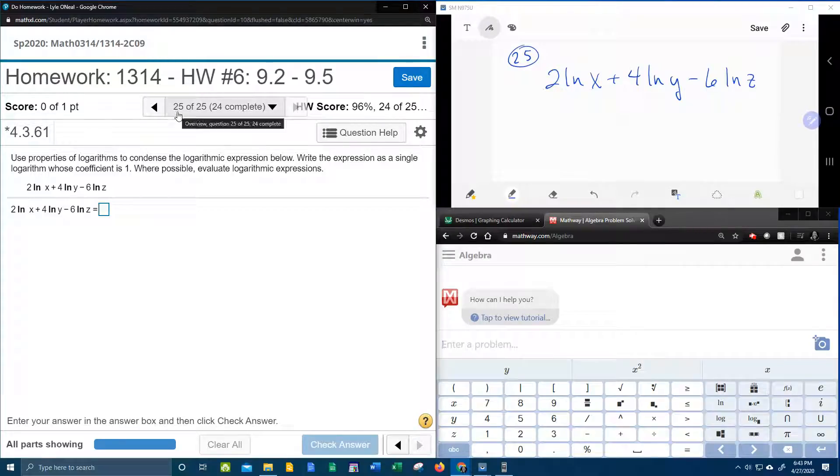All right, here we go, problem number 25 of 25. This is the last problem in our college algebra homework number 6 in MyLabMath. It says use properties of logarithms to condense the logarithmic expression. Write the expression as a single logarithm - those mean the same thing. Condense means to write as a single logarithm, so that was kind of redundant. Where possible, evaluate logarithmic expressions.